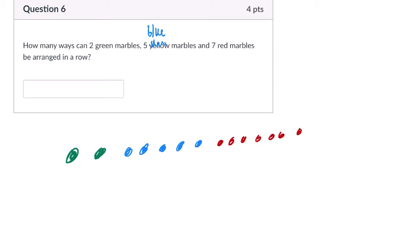How many ways can they be arranged in a row? Well, we've got two plus five plus seven things that we're arranging, right? That's 14 altogether. Now you would normally just say, well, 14 things arranged 14 ways, that's 14 factorial.